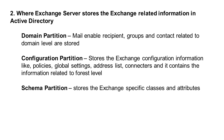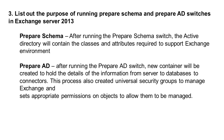Where does Exchange Server store Exchange-related information in Active Directory? Domain Partition: mail-enabled recipients, groups, and contacts related to the domain level are stored here. Configuration Partition: stores Exchange configuration information like policies, global settings, address lists, and connectors. Schema Partition: contains information related to forest-level schema — stores Exchange-specific classes and attributes.